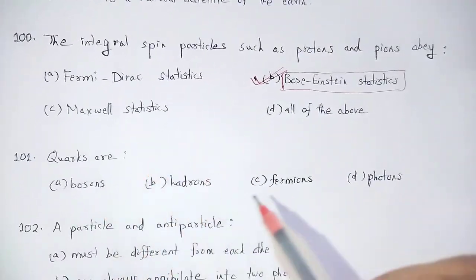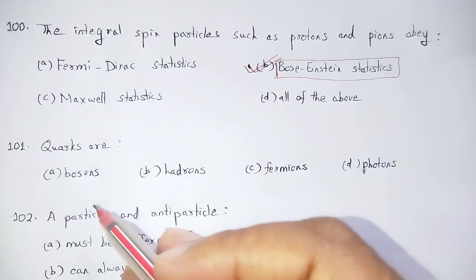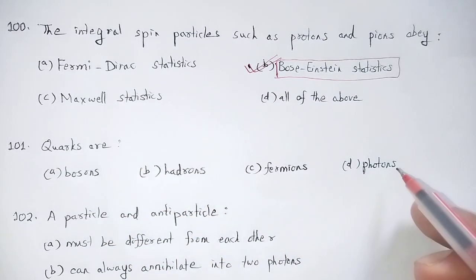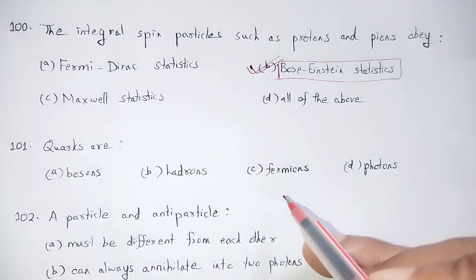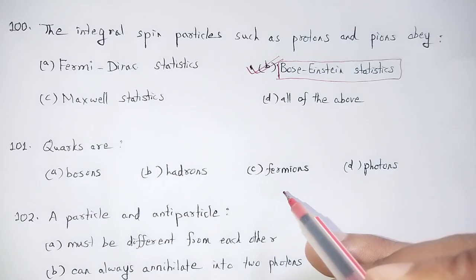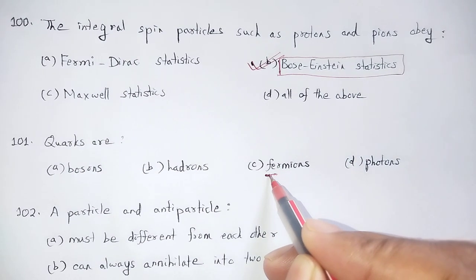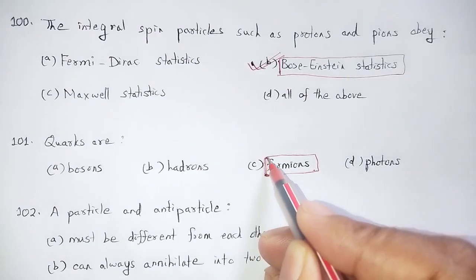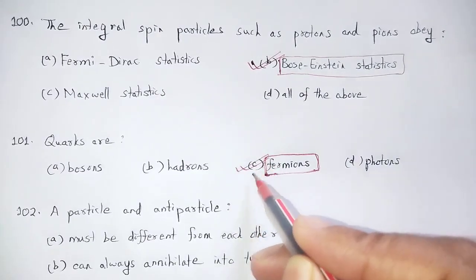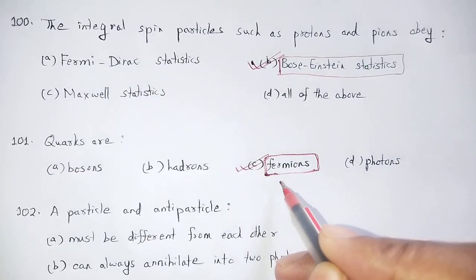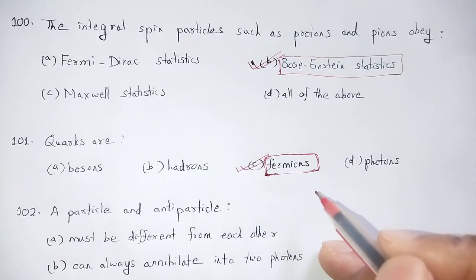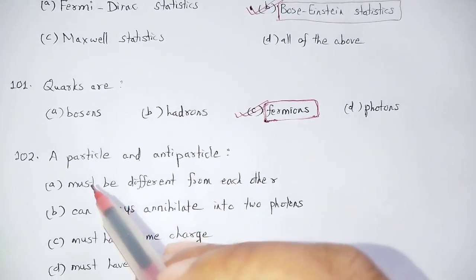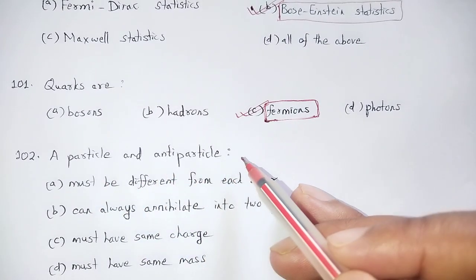Quarks are fermions; hadrons include bosons and fermions; photons are bosons. Quarks are fermions under Fermi-Dirac statistics. The particle and anti-quark form option C — fermions with flavors: up, down, charm, strange, top, bottom. Particle and anti-particle form mesons.